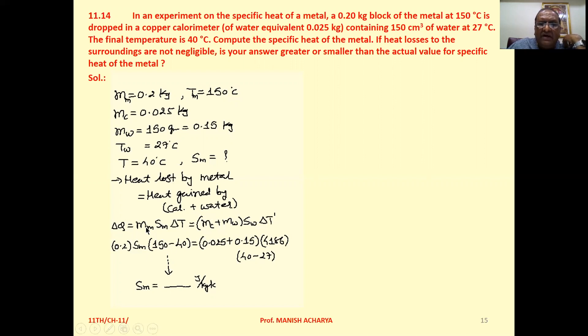Now see, mass of metal 0.2, specific heat of metal Sm, delta T that is 150 minus 40, because initially the metal is at 150 and finally it is at 40.